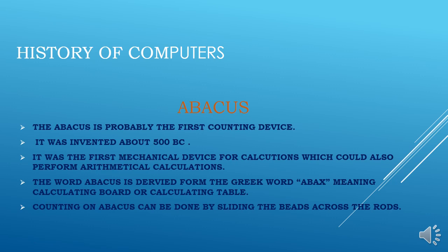The abacus was invented about 500 BC. It was the first mechanical device for calculations, which could also perform arithmetical calculations. The word abacus is derived from the Greek word abax, meaning calculating board or calculating table. Calculating on the abacus can be done by sliding the beads across the rods.